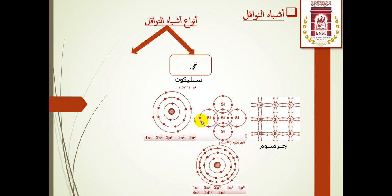نفس الشيء ينطبق على الجيرمانيوم، فكلاهما عناصر رباعية التكافؤ أي لها أربعة إلكترونات على مستوى المدار الأخير أو الغلاف الخارجي. الجيرمانيوم في المدار الأول لديه إلكترونان، والمدار الثاني ثمانية إلكترونات، والمدار الثالث ثمانية عشر إلكترون، والمدار الأخير أربعة إلكترونات.